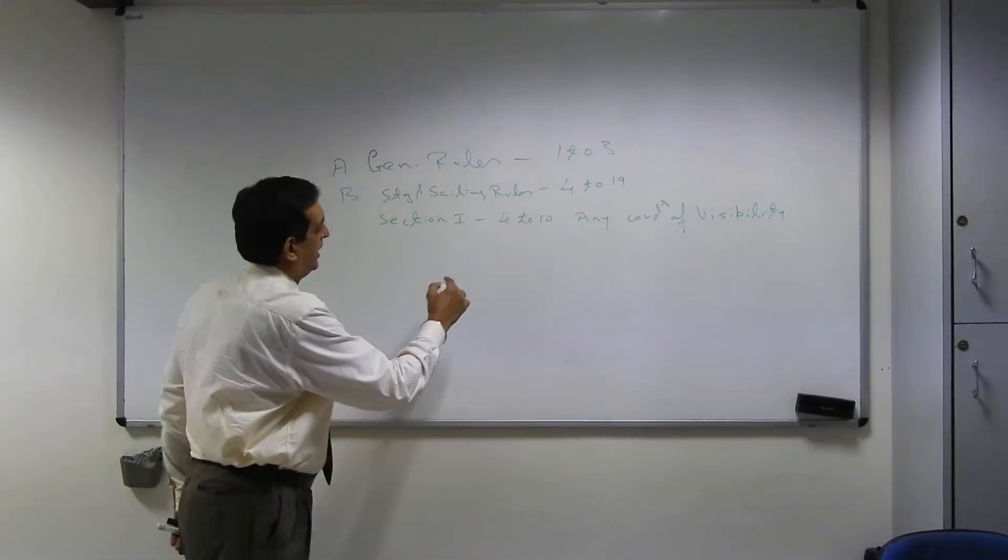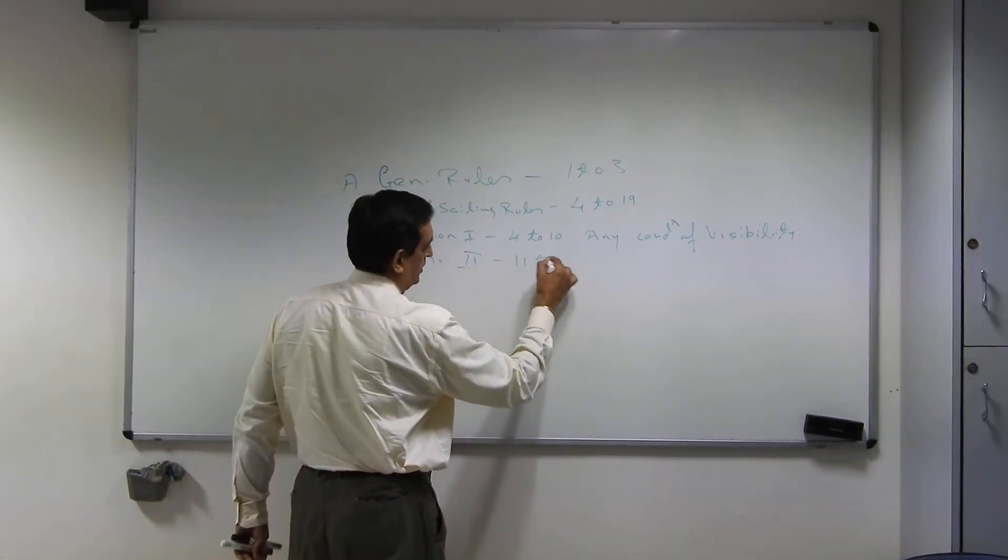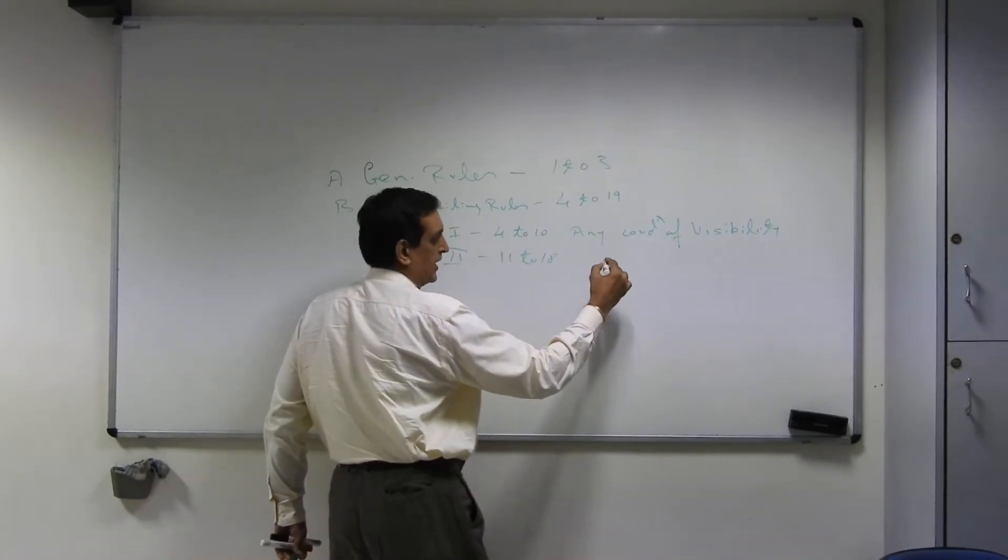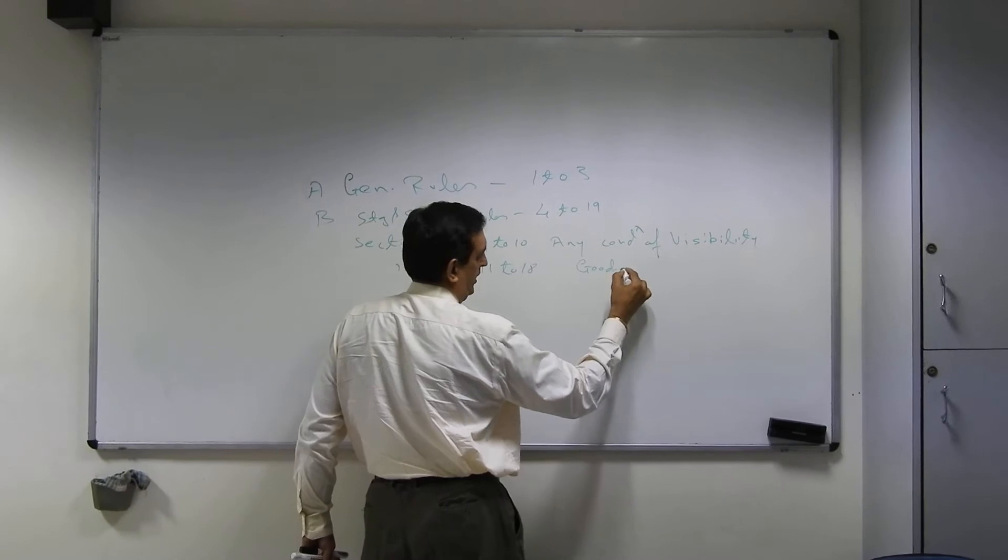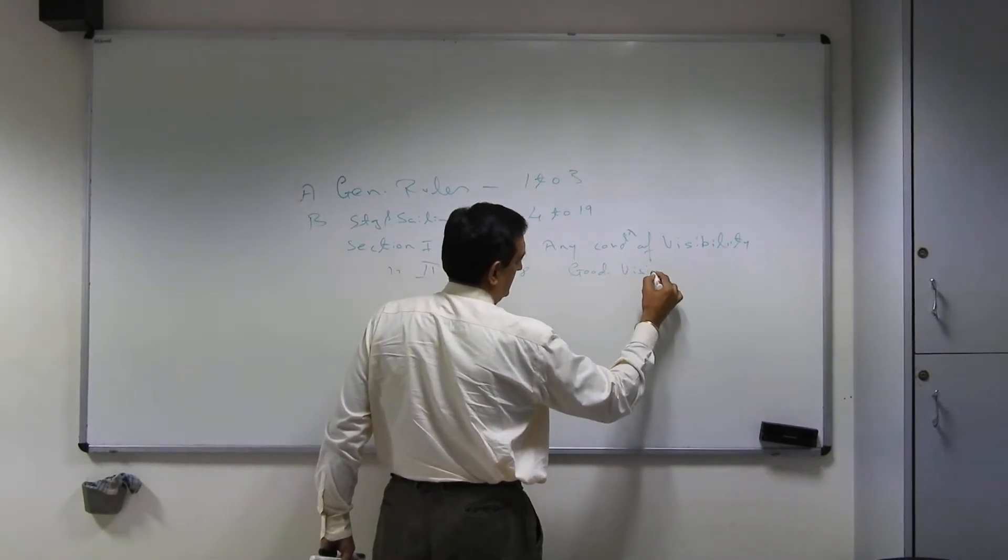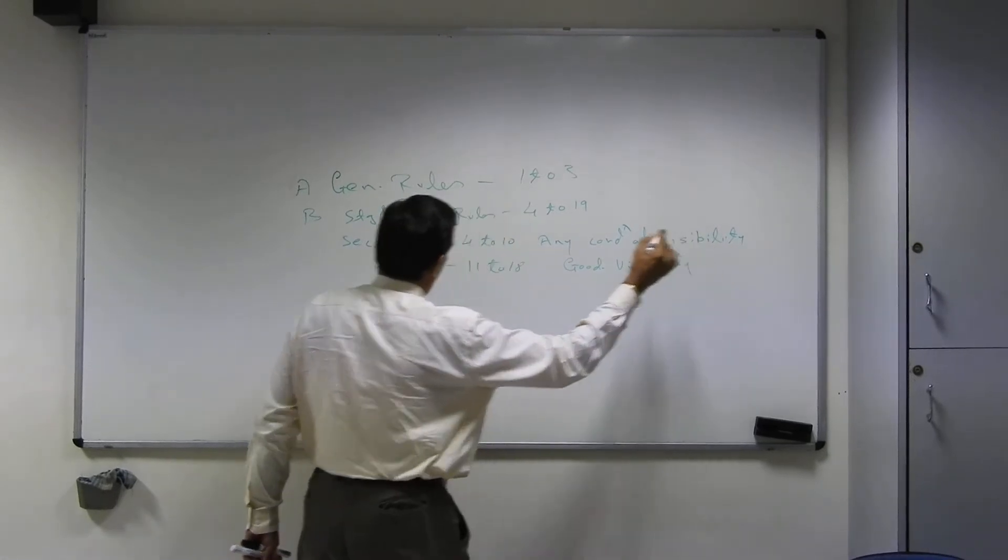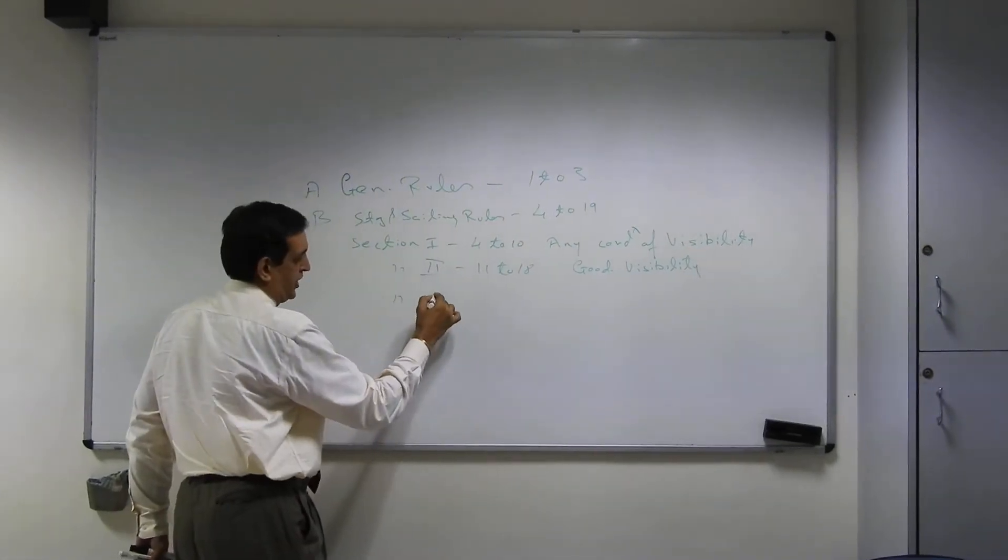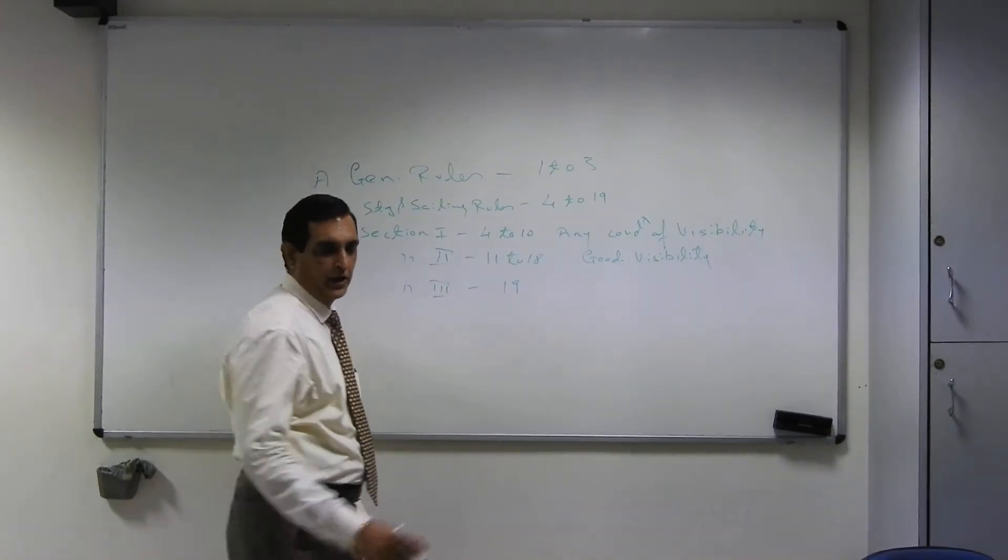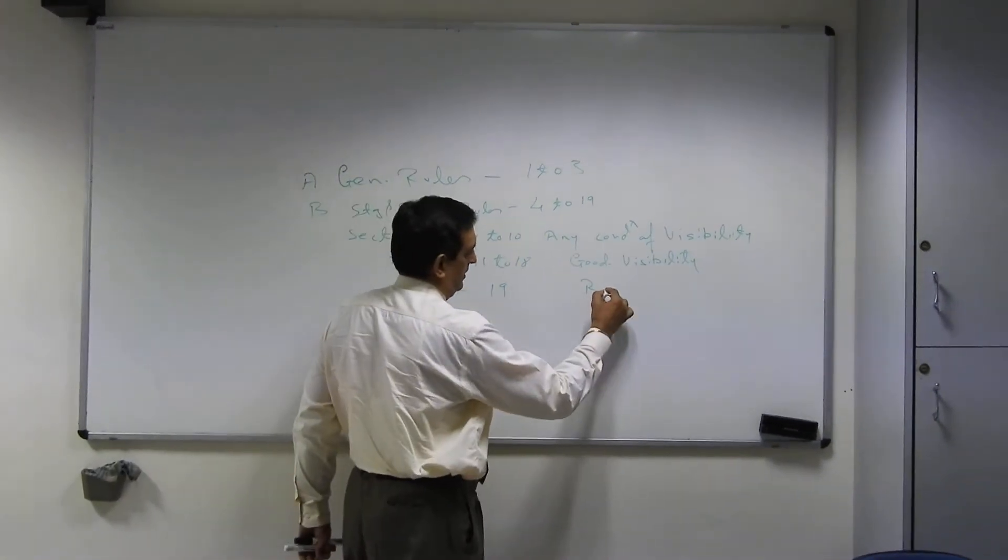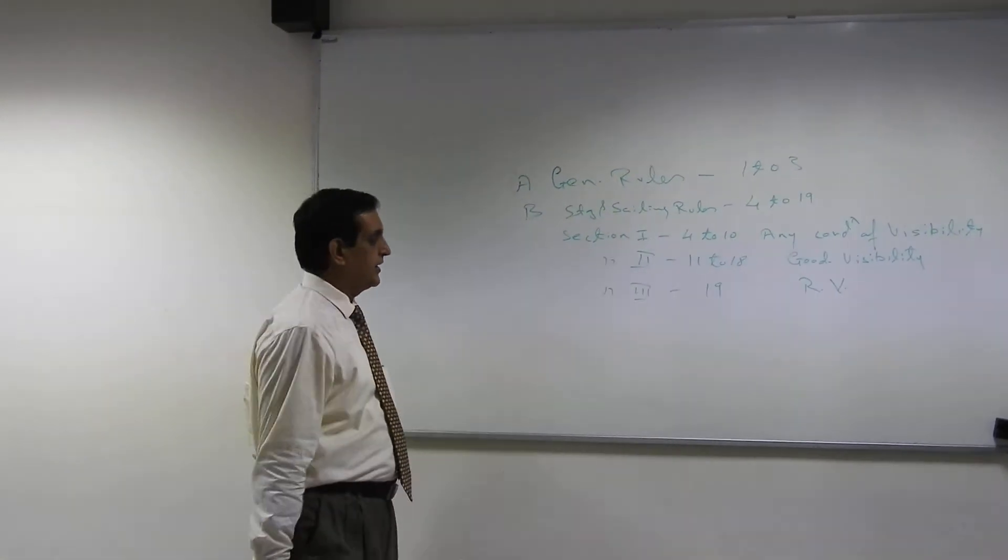Then we have Section 2, rules 11 to 18, applicable only in sight of one another. And then we have Section 3 which is only one rule, rule 19, applicable in restricted visibility.